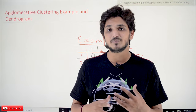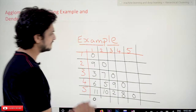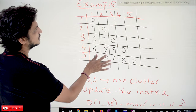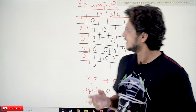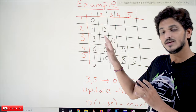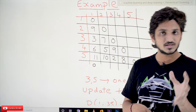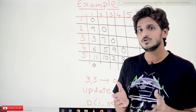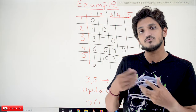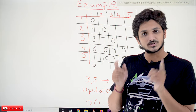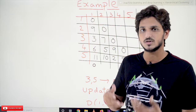Coming to today's class, let's take an example and understand how agglomerative clustering works. In our example we have 5 data points, and we are calculating the distance between each and every data point — this is called the distance matrix. How agglomerative clustering works is: it takes each data point as one cluster, called a singleton cluster. Out of that, it identifies the clusters having the minimum distance and joins them as a single cluster.